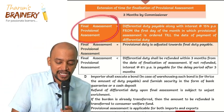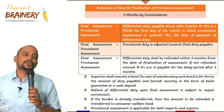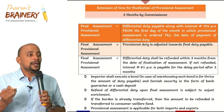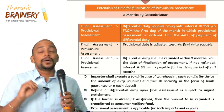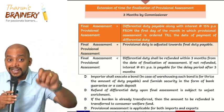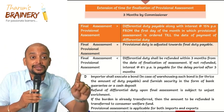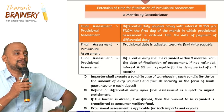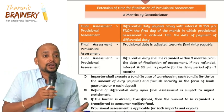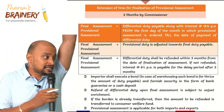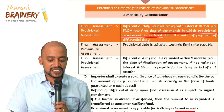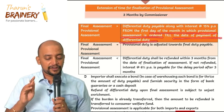If the final assessment is more than the provisional assessment, the importer or exporter is required to pay the differential duty along with interest at 15% per annum. This interest is computed from the first day of the month in which the goods are imported — that is, when provisional assessment is resorted to. For example, if the provisional assessment happened on 28th March, we need to compute interest from 1st March — the first day of the month — till the date of payment of the differential duty.